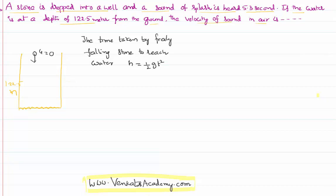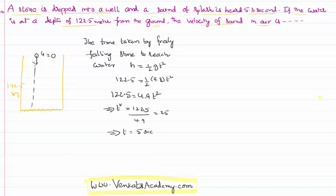So 122.5 = 4.9t². Therefore t² = 122.5/4.9 = 25, which implies t = 5 seconds. This tells us that the freely dropped stone takes a time of 5 seconds to reach the bottom.